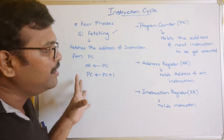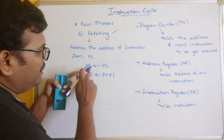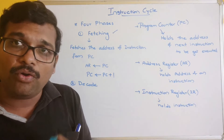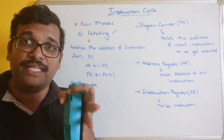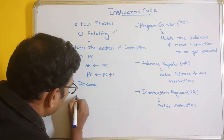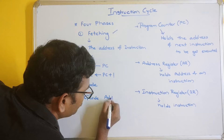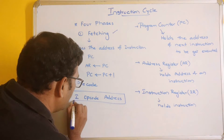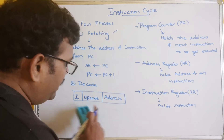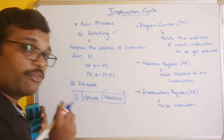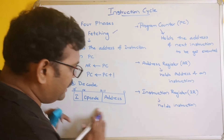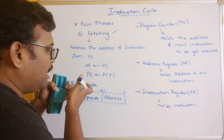The second step is decode. We have to decode the instruction. The instruction format has three parts: the address (bits 0 to 11, that is 12 bits), the opcode (bits 12 to 14, that is 3 bits), and the mode I (bit 15, 1 bit). With 3 opcode bits, we can represent 2³ = 8 operations such as addition, subtraction, multiplication, and so on. The complete instruction in IR is decoded into these three parts.